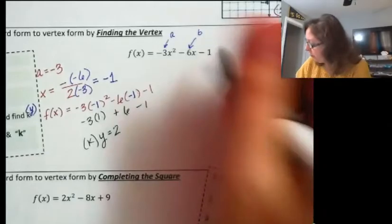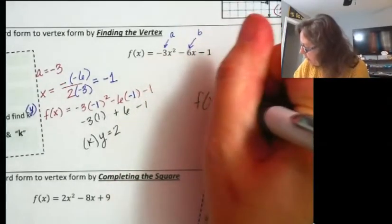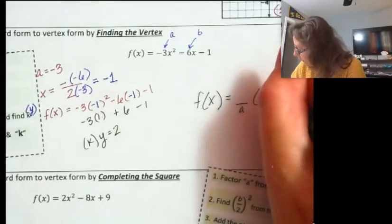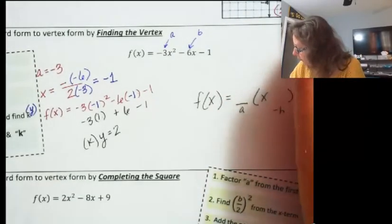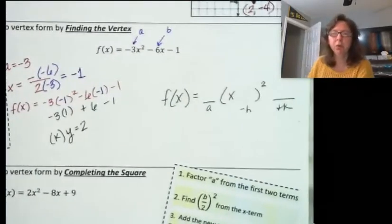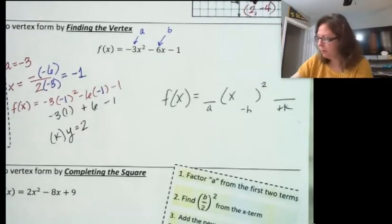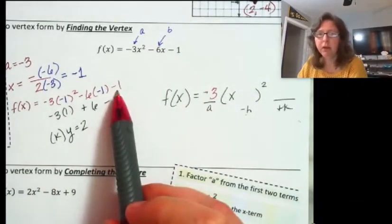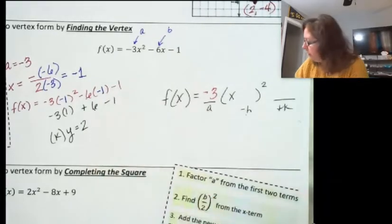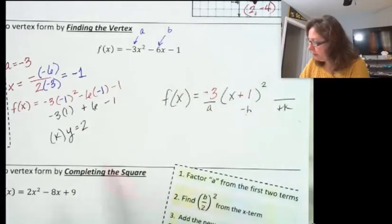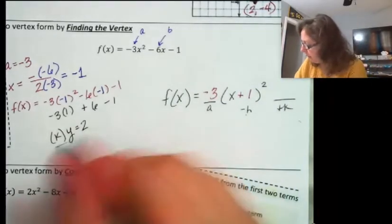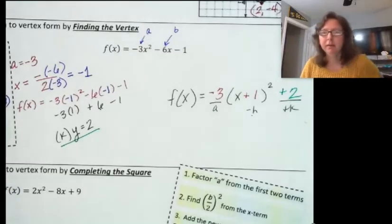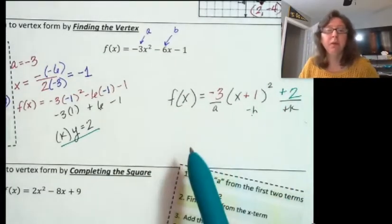Now we plug a, h, and k into vertex form. The a is negative 3; negative h — I need to change the sign, so that should be positive 1 inside the parentheses; and the k value is 2, so we keep it positive. The vertex form is f(x) equals negative 3(x plus 1) squared plus 2.